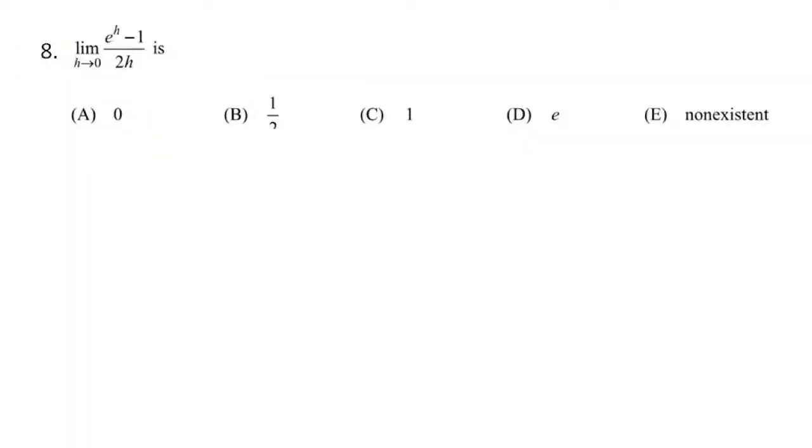What's the first line of defense with all limits? What are we going to do first? Plug in. Very few times does it ever work, but it's a great place to start. So my limit as h approaches 0. Let's see, that's going to be e to the 0, minus 1 over 2 times 0. So I get 1 minus 1 over 0, which I get 0 over 0. That's indeterminate. So what rule do I need here? L'Hopital.